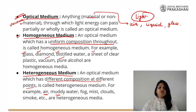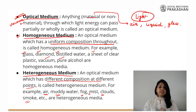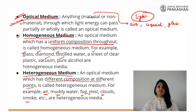Other examples of heterogeneous mediums are muddy water, fog, mist, clouds, smog etc. Both homogeneous and heterogeneous are considered optical mediums because light can partially or wholly pass through them.